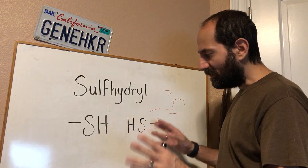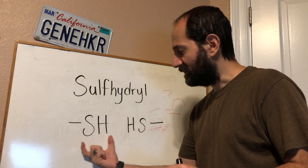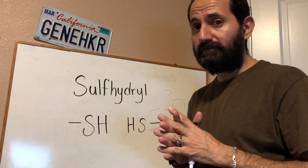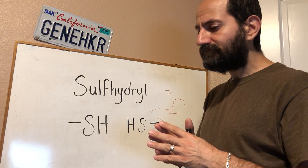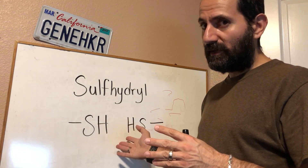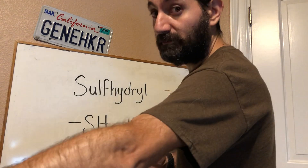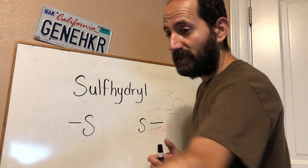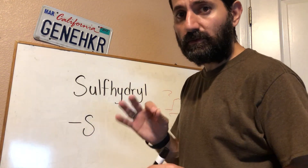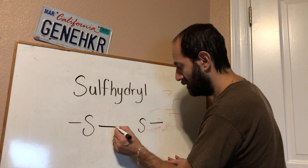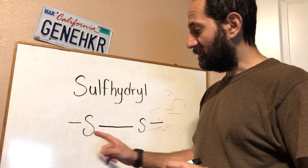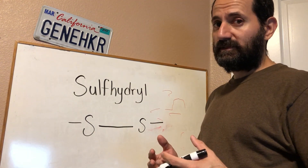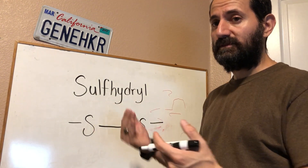So this sulfhydryl group is going to interact with this other sulfhydryl group on two different molecules, and something special happens. You would expect some kind of hydrogen bond to form, but that's not what happens. Instead, you're going to lose these two hydrogens, and you're going to actually form a real covalent bond between the two sulfur atoms. So now this sulfur is actually covalently bonded to that sulfur.